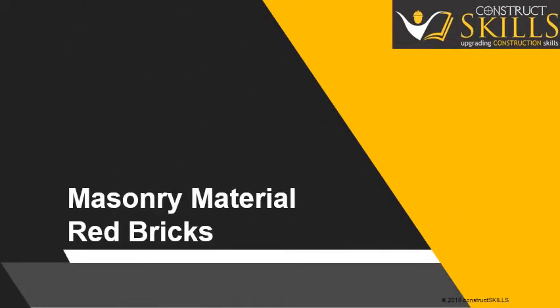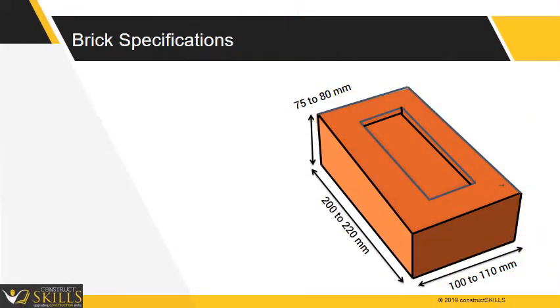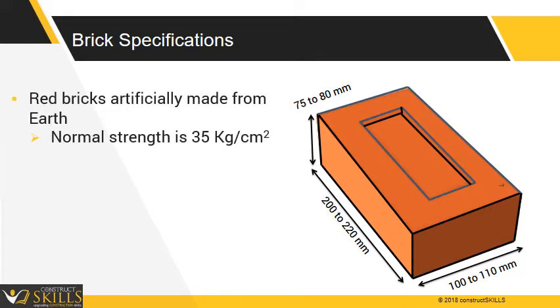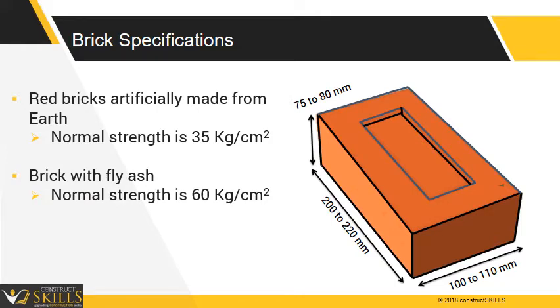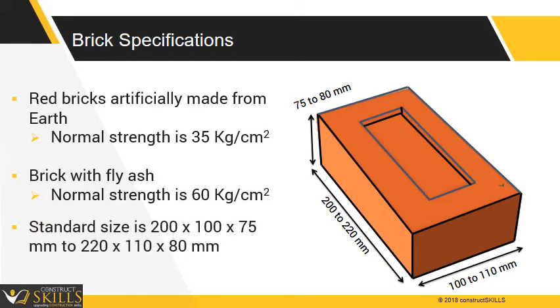In this lecture, we will learn about classification, general quality, dimensions and physical requirements of common burnt clay building bricks used in buildings. Clay bricks are commonly known as red bricks. Red bricks are artificially made from earth and their normal strength is 35 kg per cm². Brick with fly ash has a normal strength of 60 kg per cm². Standard size of brick is 200 x 100 x 75 mm to 220 x 110 x 80 mm.